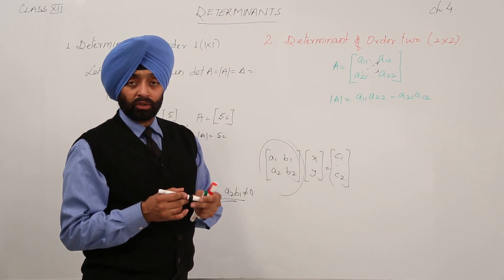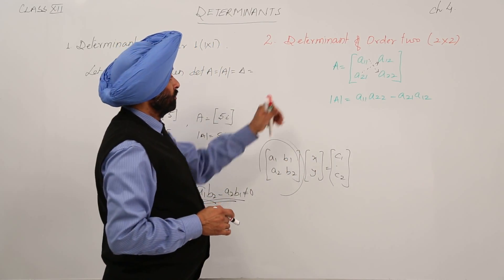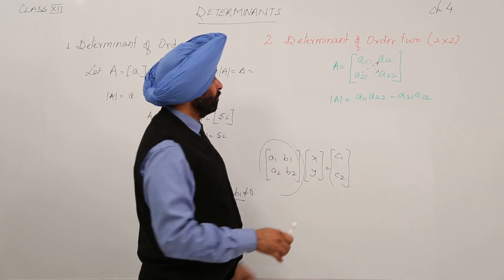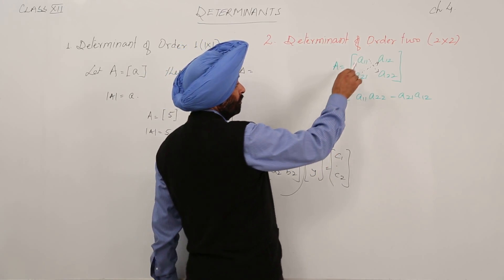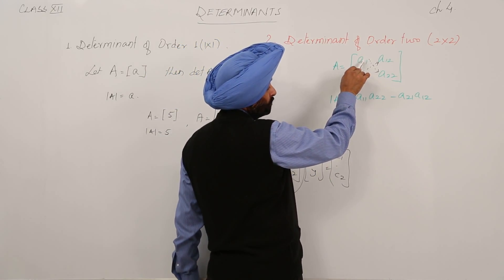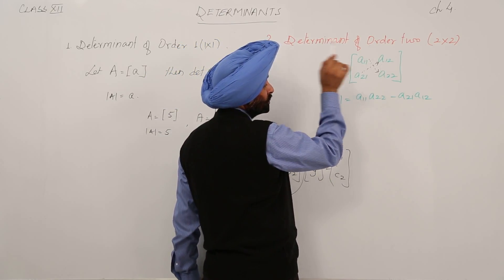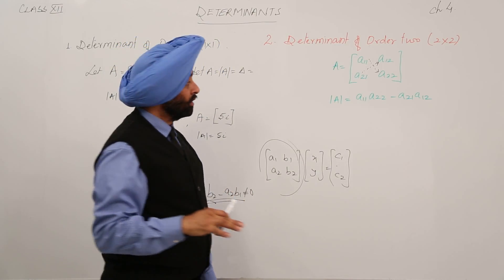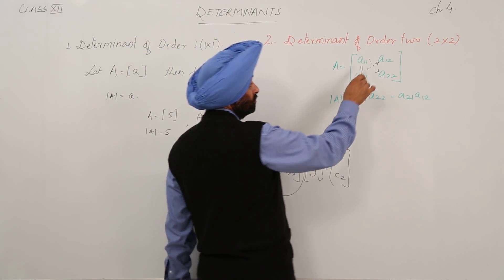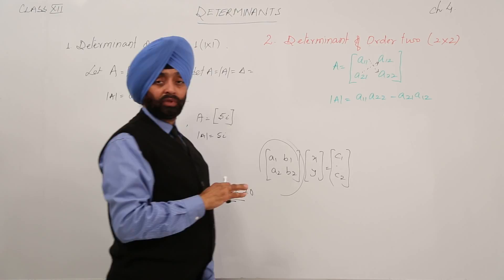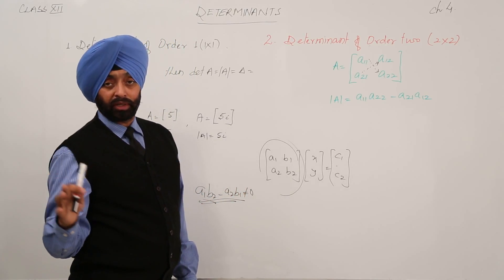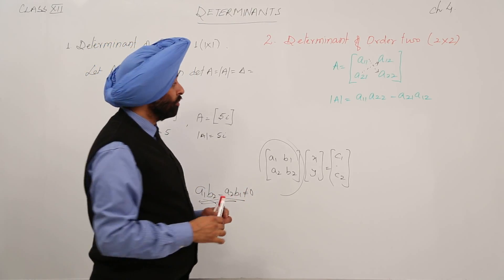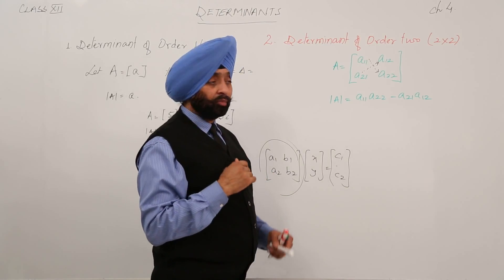So for order 2, the determinant of order 2 can be calculated by multiplying the elements of the principal diagonal, minus the elements of the sub-principal diagonal (other than the principal diagonal). That is the determinant.